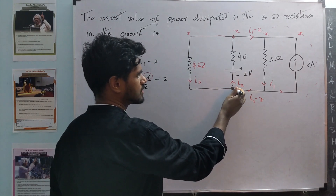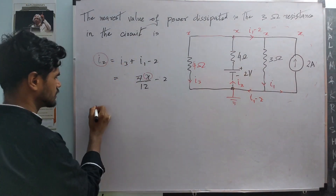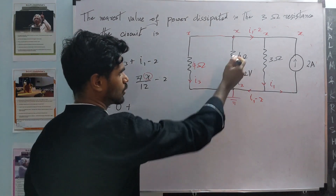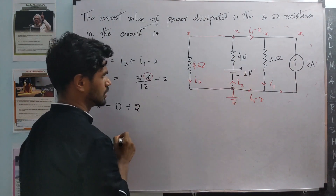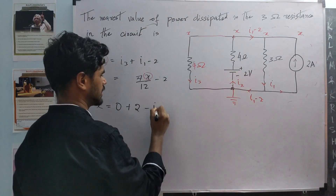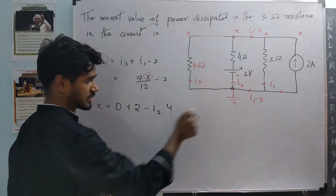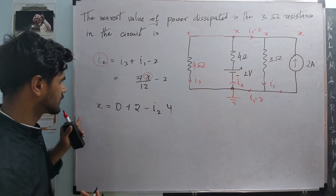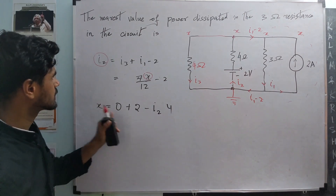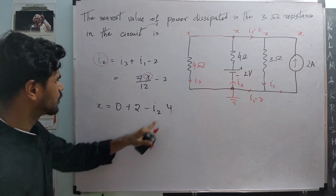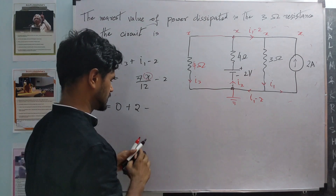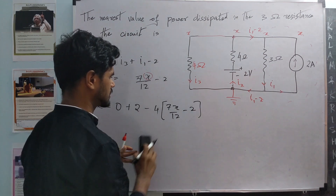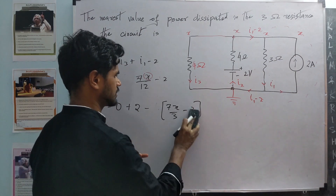Writing the KVL equation: the voltage starts at 0, there is a 2 volt increase from the source, then a drop of I2 times 4. So: 0 plus 2 minus I2 times 4 equals x. This gives us a second relationship between I2 and x. Substituting the expression for I2: 4 times (7x by 12 minus 2) equals 2 minus x, which gives 7x by 3 minus 8 equals 2 minus x.